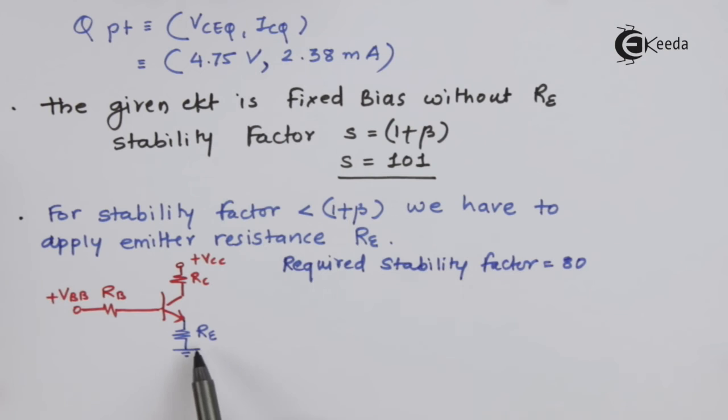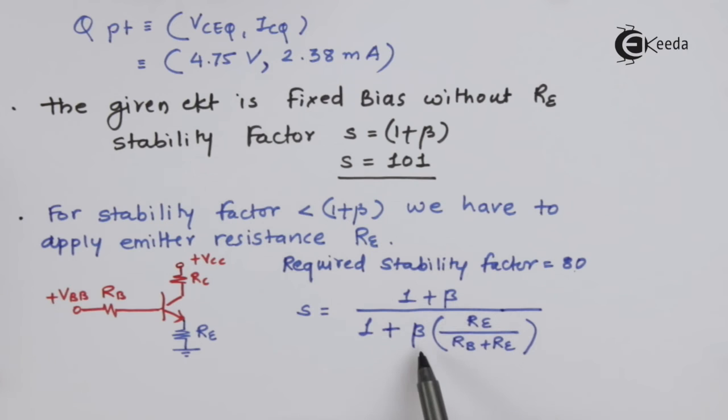After inserting RE, we will have a different stability factor: S equals 1 plus beta divided by 1 plus beta times RE upon RB plus RE. As S equals 80, we put beta equals 100 and can easily get the value of RE.